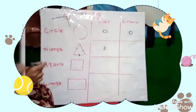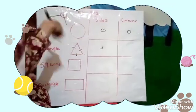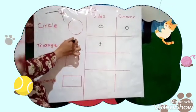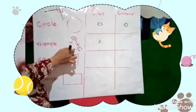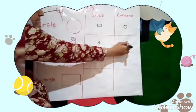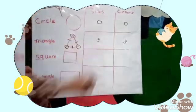Corners — how many corners? Let's count. One, two, three. Three corners. Three.